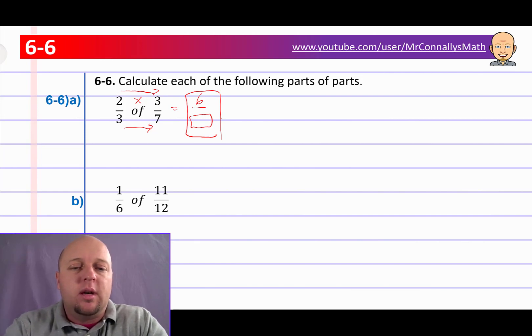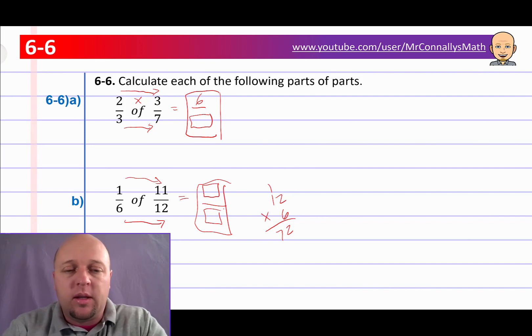We've got one-sixth of eleven-twelfths. Okay, same thing. Of means times. So we're going to do one times eleven on the top. So that would be a number. And then on the bottom, we've got six and twelve. And multiply those together. So six times twelve. If you don't know it off the top of your head, you can always just write off to the side. Twelve times six. Okay, six times two is twelve. Six times one is six. Plus one is seventy-two. Go ahead and put that in the bottom over there. And you'll have your final answer. All right, pause if you need more time. Otherwise, let's move on.